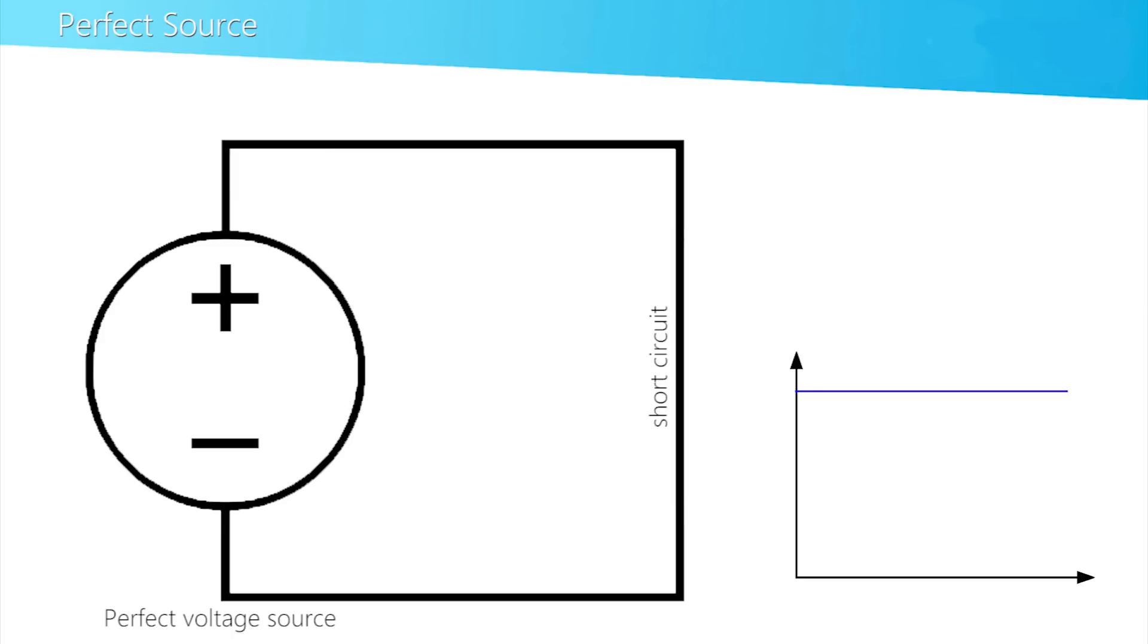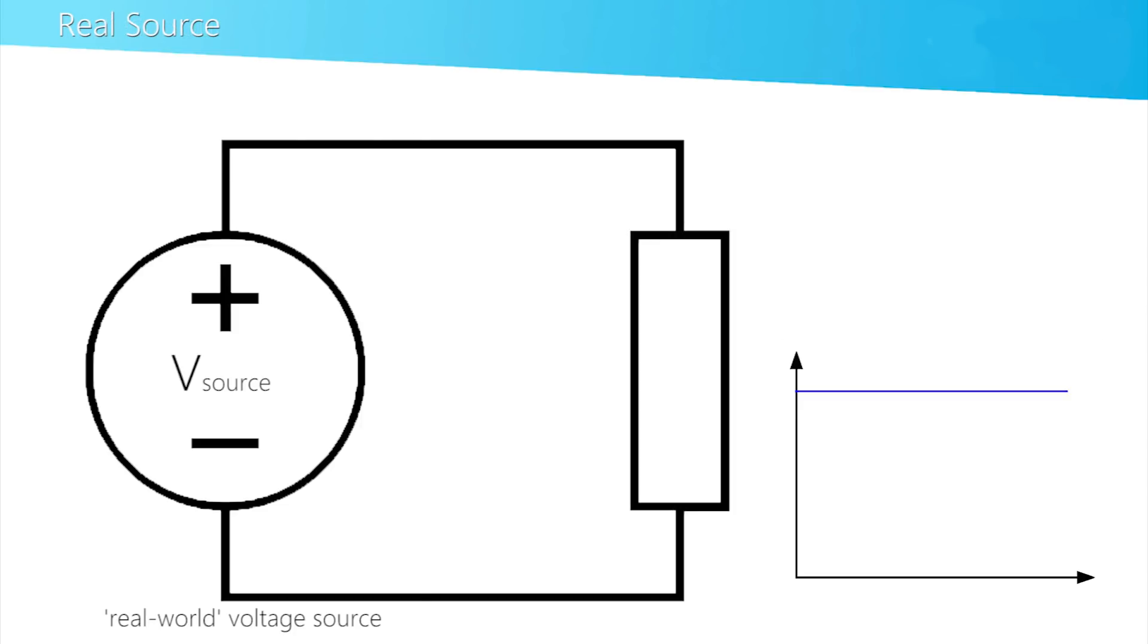in which case it's delivering an infinite current. This model, of course, has to be modified to represent real-world batteries. In practice, the internal structure of any battery has some kind of resistance and this may be modelled thus. RINT is the internal resistance and it has the following effect. As the load increases, i.e. the resistance falls, the current increases.